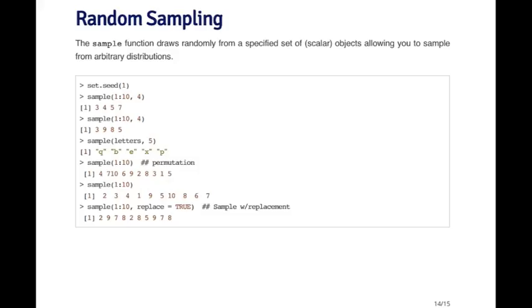So the last function I want to talk about is the sample function. And the sample function allows you to draw randomly from a specific set of objects that you specify. So if you give it a vector of numbers, it allows you to draw a random sample from that vector of numbers. And so you can kind of create any arbitrary distribution that you want by specifying a vector of objects and then sampling from it.